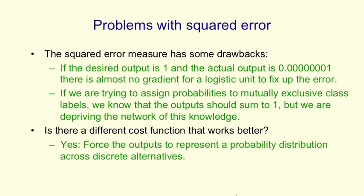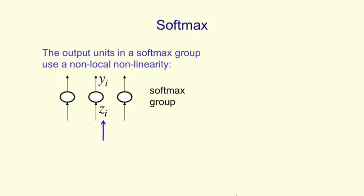What we need to do is force the outputs of the neural net to represent a probability distribution across discrete alternatives, if that's what we plan to use them for. The way we do this is by using something called a softmax. It's a kind of soft continuous version of the maximum function.